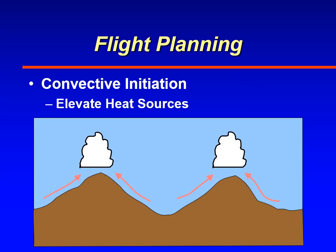Another factor to consider when planning a flight over mountainous areas: under benign weather patterns, strong heating on the slopes in the afternoon causes air to rise. If there's enough moisture, you'll get cumulus clouds, cumulus congestus, and then thunderstorms. Thunderstorms typically form in the afternoon over mountainous areas — we call that convective initiation caused by elevated heat sources, the mountains themselves being those elevated heat sources.